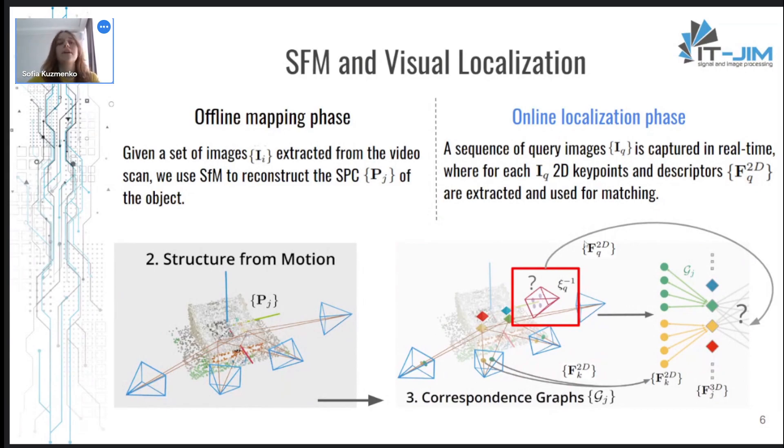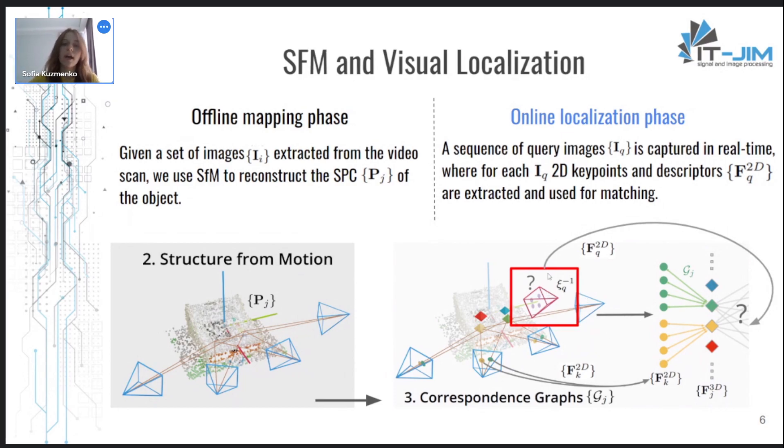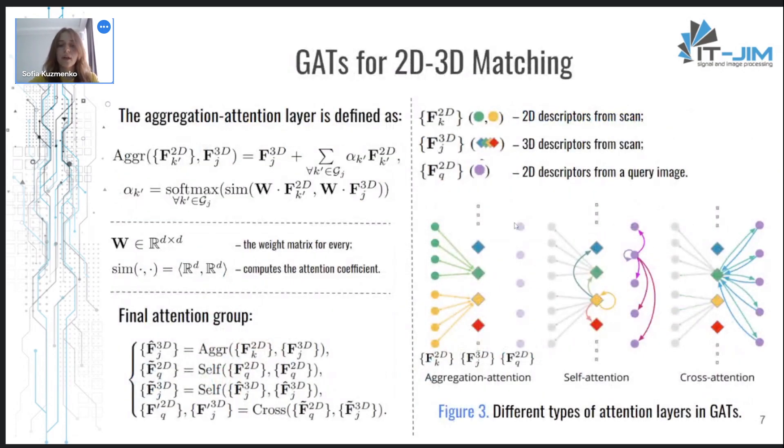But here comes the task of how to match obtained 2D features with not yet discrete 3D points from SFM. And here also comes the proposal of this work which lies in a direct 2D-3D matching between the query image and the SFM point cloud. At this step authors propose to use graph attention networks.